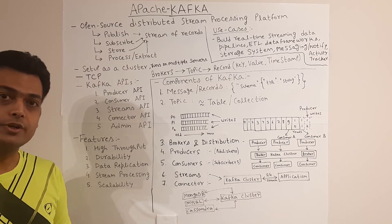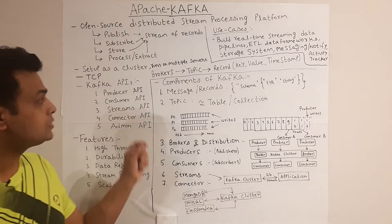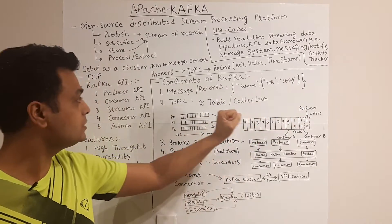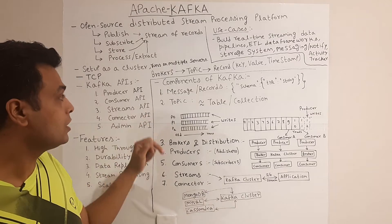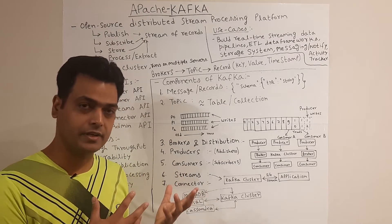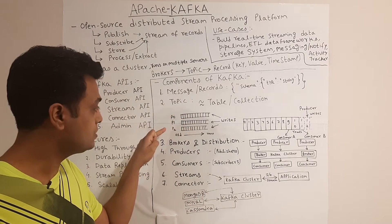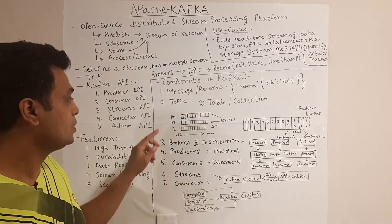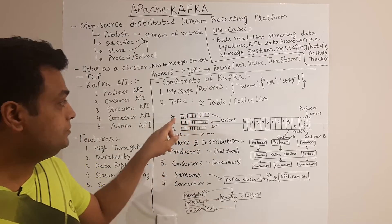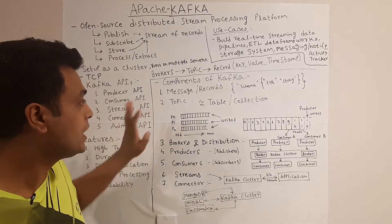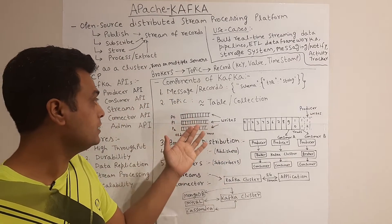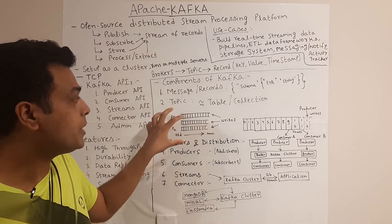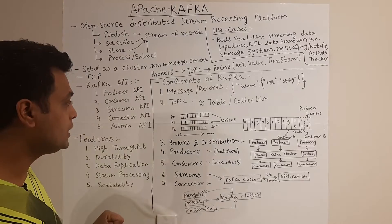The key components of a Kafka platform start with the message record — it's basically a schema of key-value pairs. Then comes the topic. A topic can be distributed into multiple partitions and these partitions can be placed on different clusters. You can write records into multiple partitions spread across different machines, and all these partitions belong to one topic.